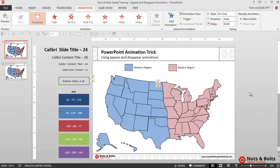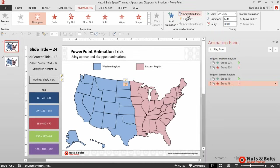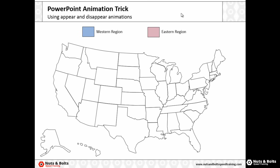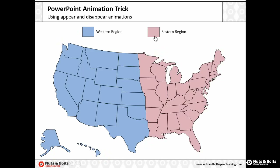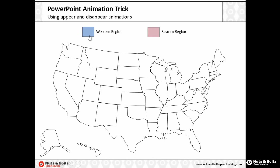With the animations hooked up, you can double-check your work by opening the Animations Pane — you should see two different animations hooked up to each of the triggers. The green star represents the Appear animation and the red star represents the Disappear animation. Hit Shift+F5 on your keyboard for presentation mode to test your different triggers by clicking the trigger objects to see if your objects fill in correctly.